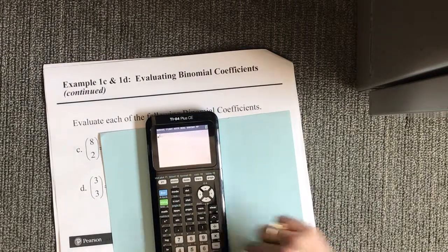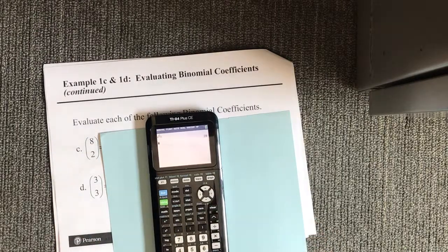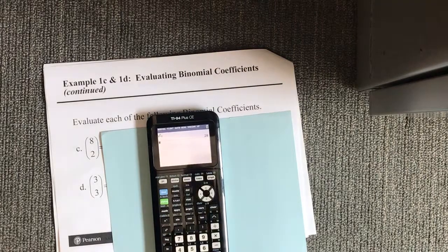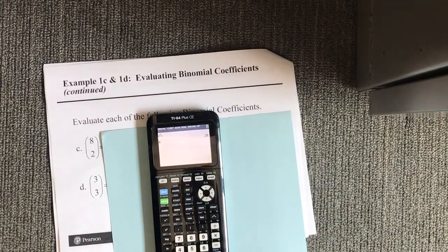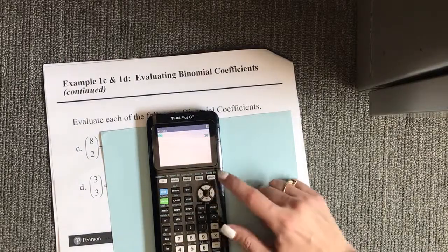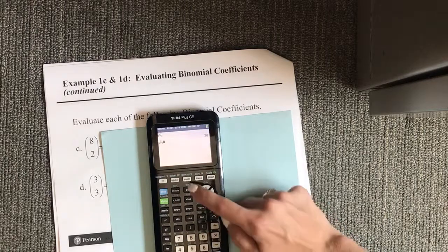So you hit that. We're going to do 8 above 2. It's 28. Remember that if you don't want to go through those keystrokes again, you just highlight what you did up here and press Enter, and it copies it.